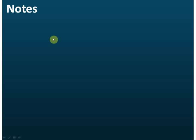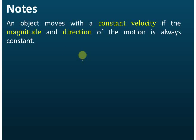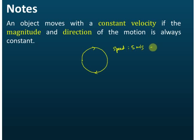An object moves with constant velocity only if both the magnitude and direction of the motion are always constant, because velocity is a vector quantity. As an example, consider an object in circular motion with uniform speed of five meters per second — the speed is constant throughout.